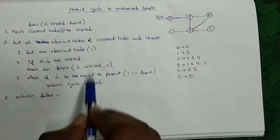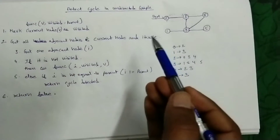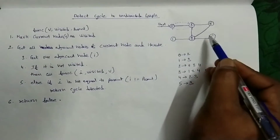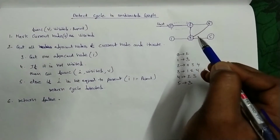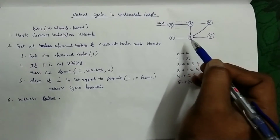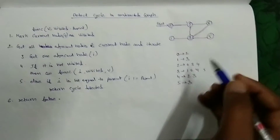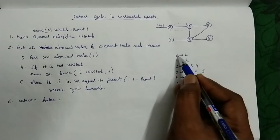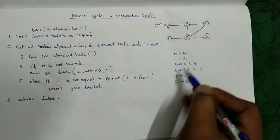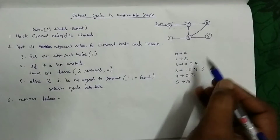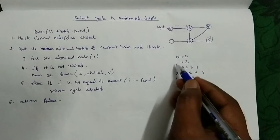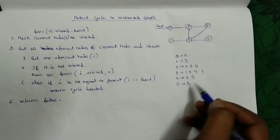This is a simple algorithm to detect a cycle in undirected graph — whether a cycle is there or not. First, we need to convert this graph into an adjacency list. You can see the first video in graphs to learn how to convert this graph into an adjacency list. The adjacency list looks like this: 0 has 2 as adjacency node, 1 has 3 as adjacency node, 2 has 0, 3, 4 as adjacency nodes. Like that, for all nodes, we note the adjacency nodes.